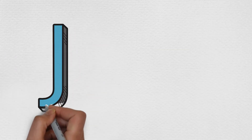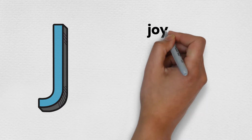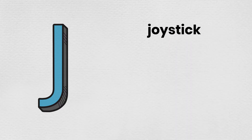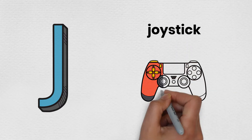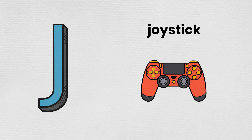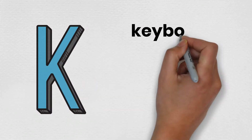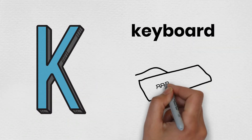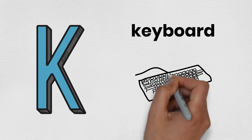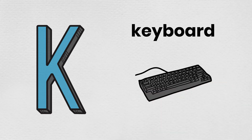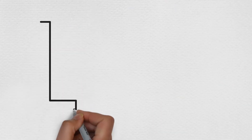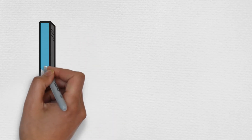J is for joystick. K is for keyboard. L is for laptop.